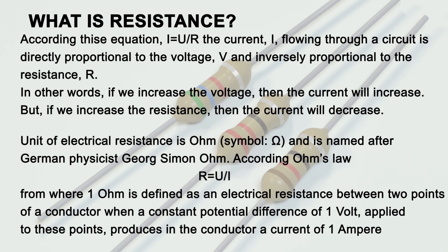The unit of electrical resistance is the Ohm, with symbol Omega, and is named after German physicist Georg Simon Ohm. According to Ohm's law R equals U divided by I. From this, 1 Ohm is defined as the electrical resistance between two points of a conductor when a constant potential difference of 1 volt, applied to these points, produces in the conductor a current of 1 ampere.